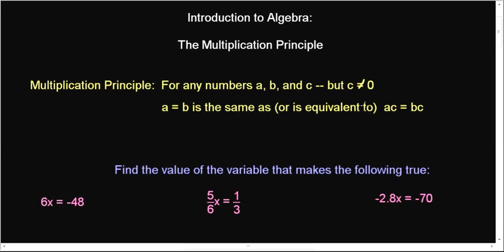However, C cannot be zero because it creates what's called a trivial solution. For any numbers A, B, and C, and C is not zero, A equals B can be rewritten as AC equals BC. We can multiply both sides by the same number, but we have to choose that number very carefully.